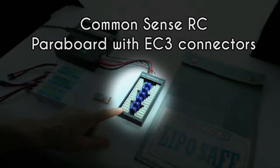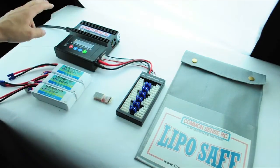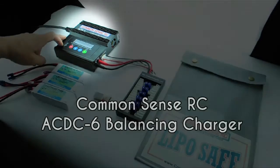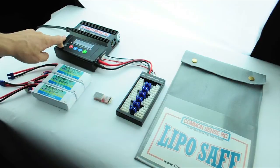Next, you'll need a para board with connectors that match your batteries. We'll be using a Common Sense RC para board with EC3 connectors. To charge the batteries properly, you will need an intelligent balancing charger like the Common Sense AC DC6 which we'll be working with today.